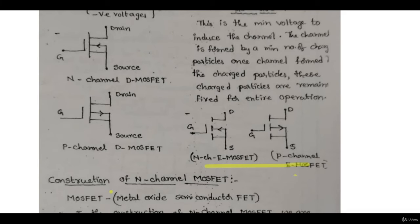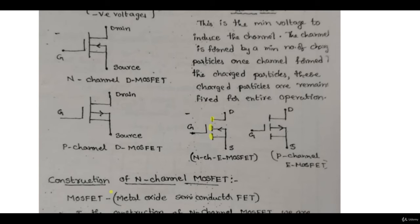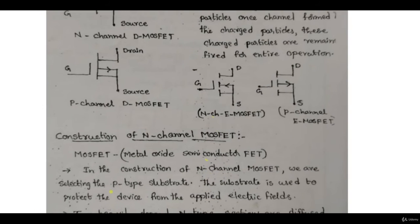The representation of enhancement type N-channel and P-channel MOSFETs uses dashed lines, whereas depletion type uses solid lines — that is the key difference in symbols. For N-channel, the arrow points inward; for P-channel, the arrow points outward. N-channel means the channel is of N-type, and P-channel means the channel is of P-type, similar to the convention used in BJTs.